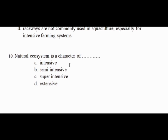Question 10: Dependence on the natural ecosystem is a characteristic of which farming system? The answer is the extensive aquaculture system, which relies entirely on the natural ecosystem for food production. Thank you.